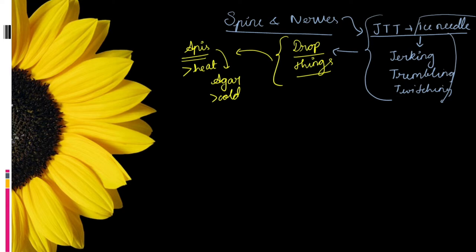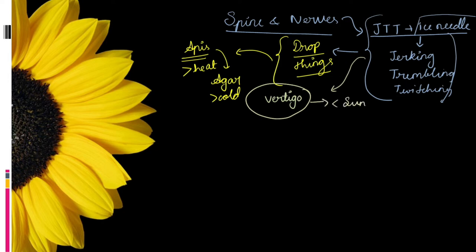In the head, vertigo is aggravated by sunlight. Due to spasm and twitching of the muscles of the eye, Babu has problems with vision, mainly double vision.